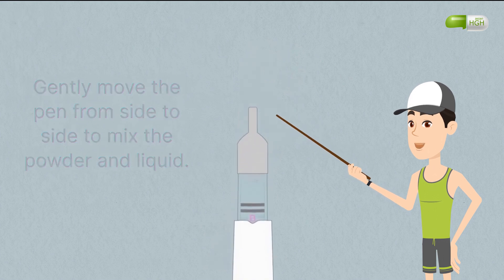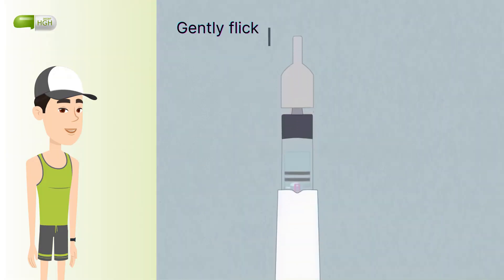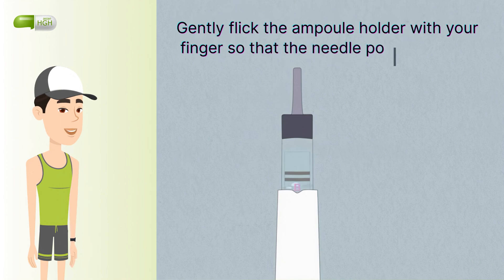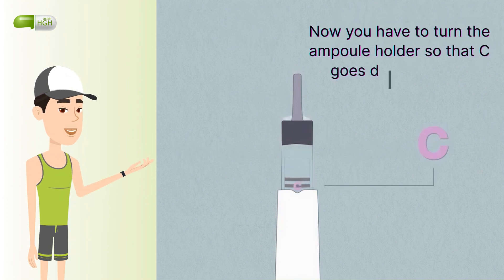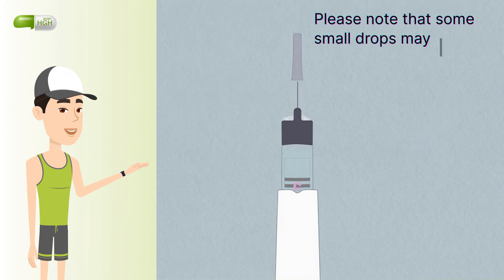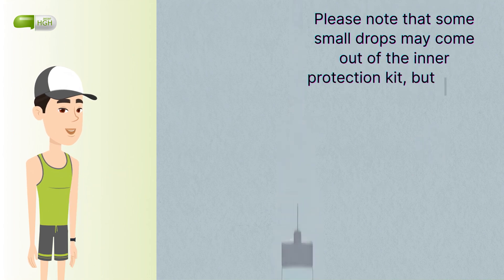Gently move the pen from side to side to mix the powder and liquid. Gently flick the ampule holder with your finger so that the needle points upward. Any bubbles will rise to the top. Now you have to turn the ampule holder so that C goes down into the recess. Please note that some small drops may come out of the inner protection kit, but this is completely normal.